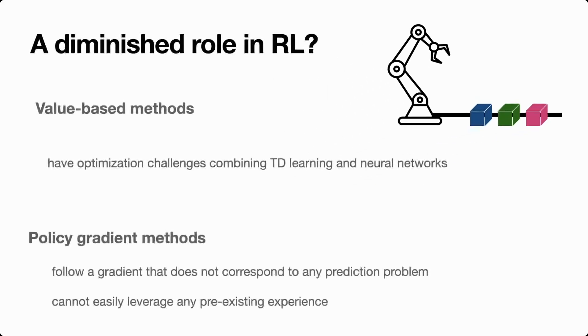To touch on how RL algorithms differ from supervised learning problems: value-based methods bootstrap their value estimate - their objective is of regression but it's a highly non-stationary regression problem with theoretical and practical difficulties with neural networks. Policy gradient methods don't correspond to a prediction problem at all, instead taking a gradient update that forces them to only use data from the most recent policy, which is highly limiting.